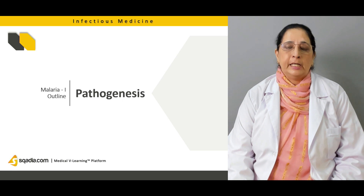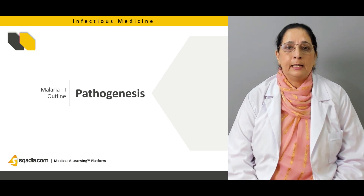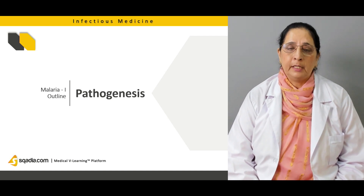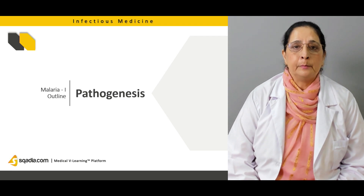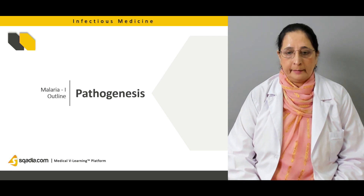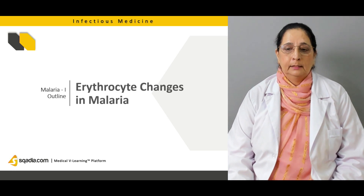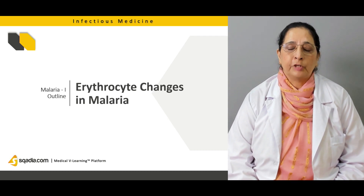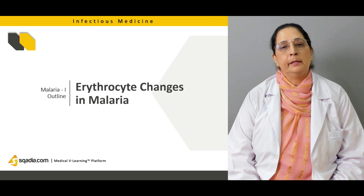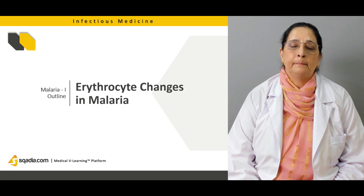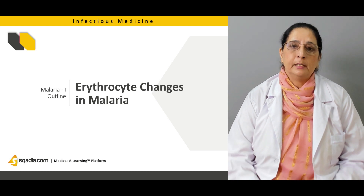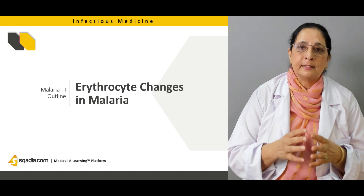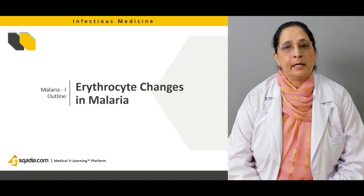We will then cover the pathogenesis — how malaria develops, how it causes disease, and what structures of the human body are infected. The most common structure affected by the malarial parasite is the red blood cell, so we will discuss in detail the changes that occur in red blood cells and how the parasite infects them.